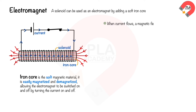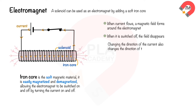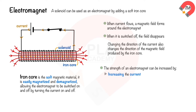When current flows, a magnetic field forms around the electromagnet. When it is switched off, the field disappears. Changing the direction of the current also changes the direction of the magnetic field. The strength of an electromagnet can be increased by increasing the current, increasing the number of coils, or adding an iron core through the center of the coils.